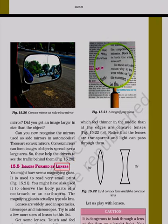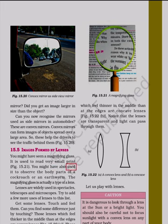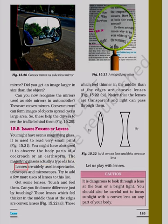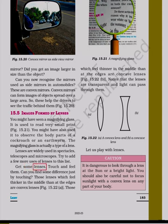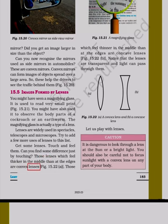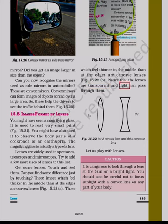15.5 Images formed by lenses. You might have seen a magnifying glass. It is used to read very small print. You might have also used it to observe the body parts of a cockroach or an earthworm. The magnifying glass is actually a type of lens. Lenses are widely used in spectacles, telescopes and microscopes. Those lenses which feel thicker in the middle than at the edges are convex lenses. Those which feel thinner in the middle than at the edges are concave lenses. Notice that the lenses are transparent and light can pass through them.